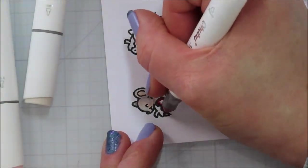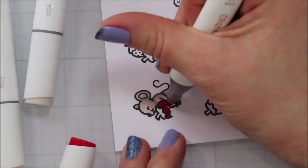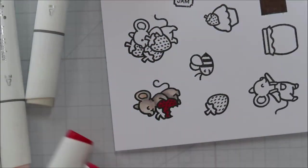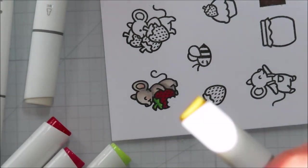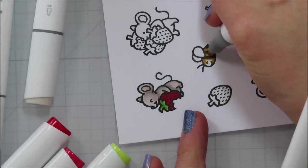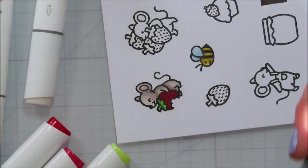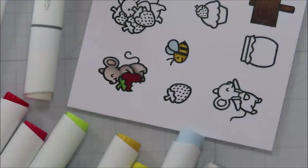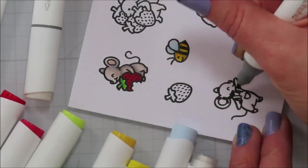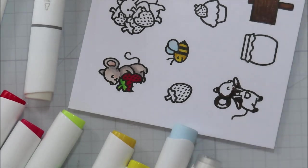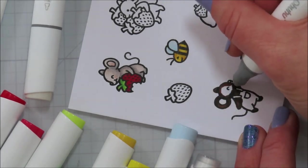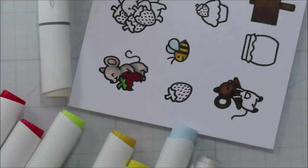I actually don't own the coordinating die set for this set. I keep trying not to buy them because I have the Brother Scan and Cut. It makes sense to use it because I spent the money on it. The whole reason was so I didn't have to buy the coordinating die cuts. I still do a lot of times. Old habits die hard. So I'm just going in and coloring all of my images and then I will cut them out with the Scan and Cut.